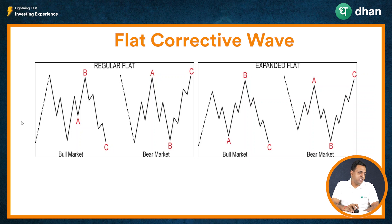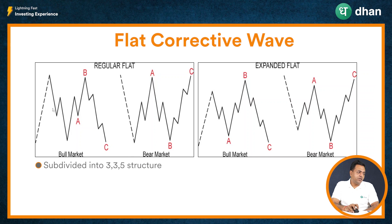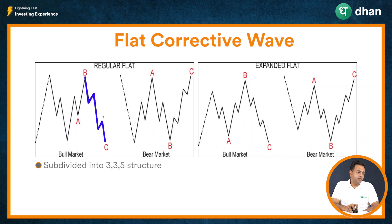As you can see, whenever we have a flat corrective wave, it will subdivide into a 3-3-5 structure: 1-2-3 for wave number A, 1-2-3 for wave number B, and 1-2-3-4-5 for wave number C.